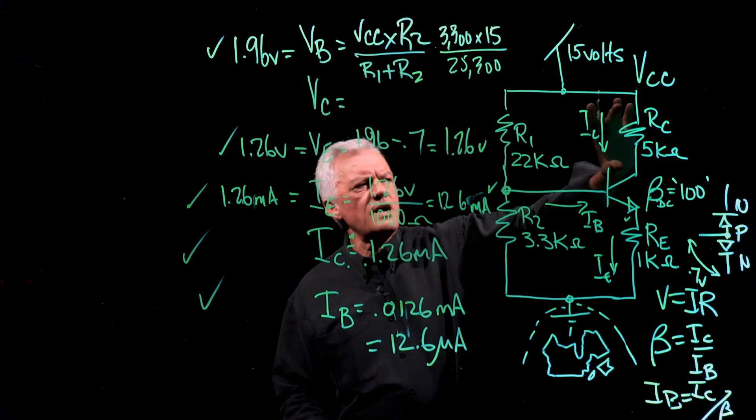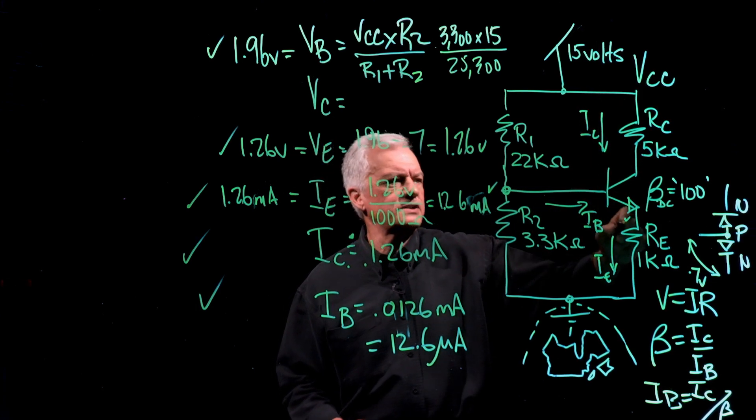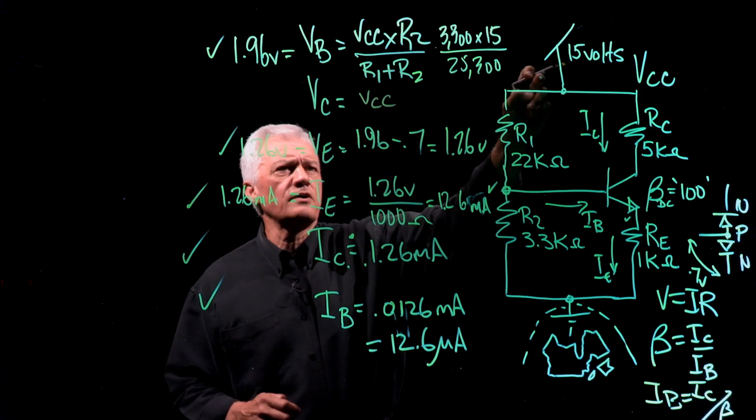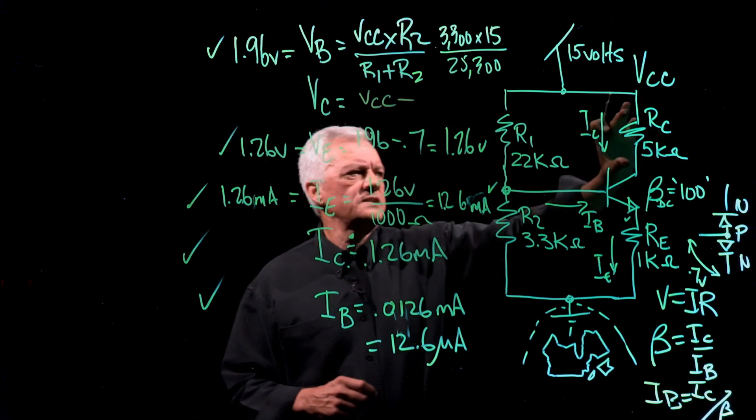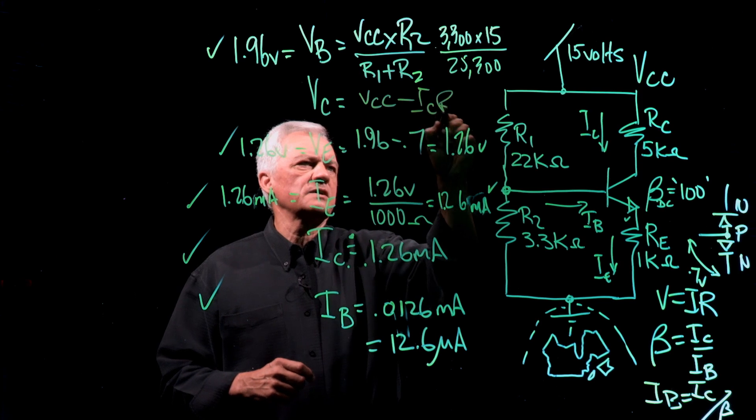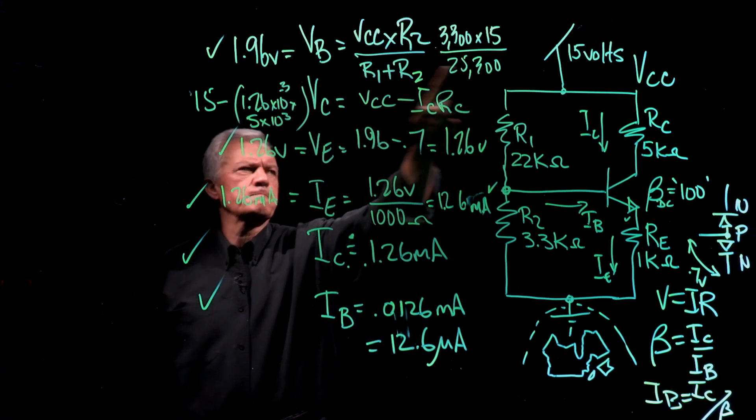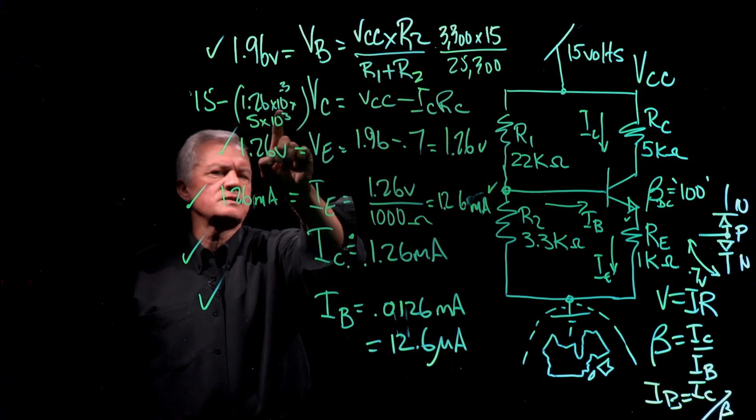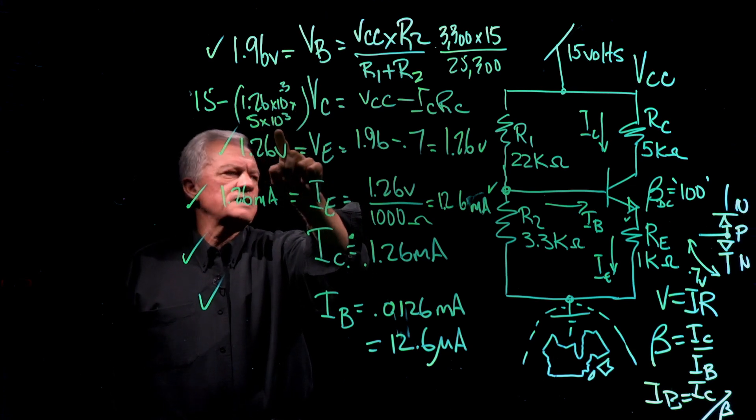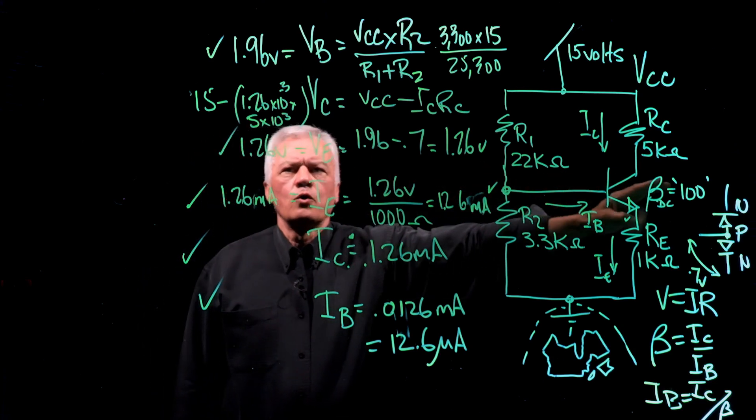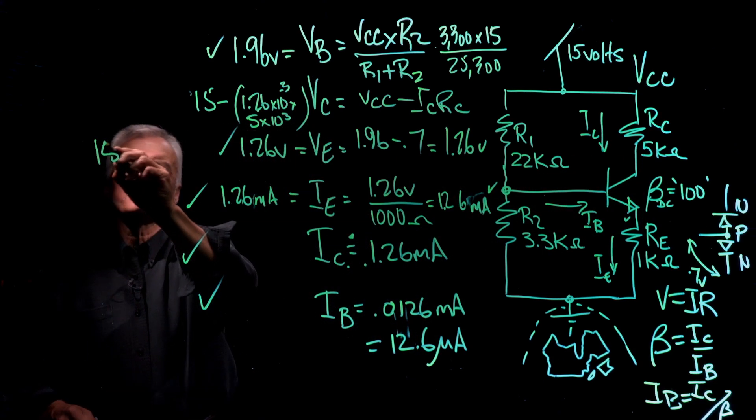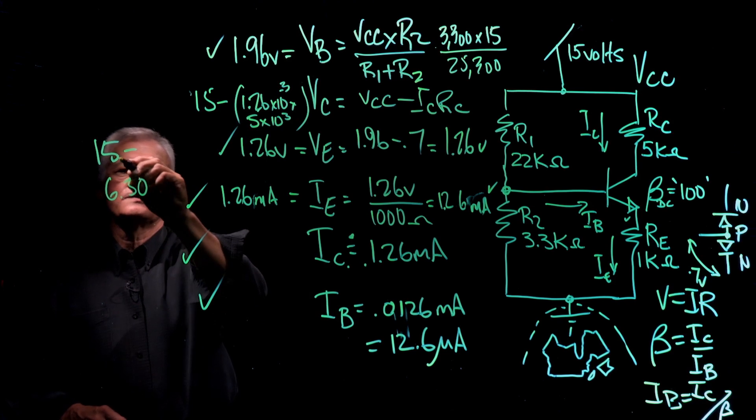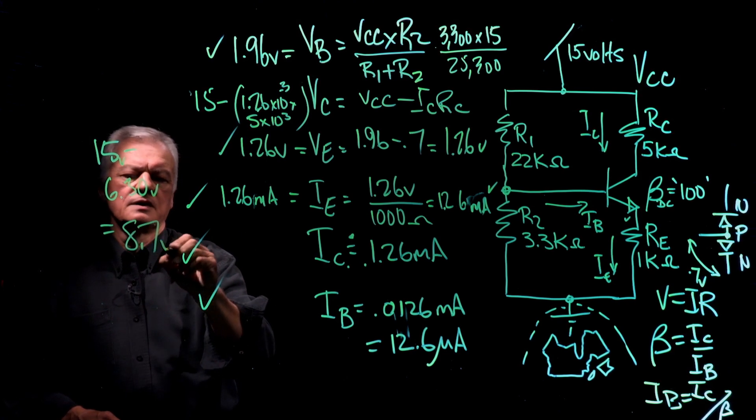And what we notice is, we're going to drop a certain amount of pressure across this resistor. So VC is going to be, at the collector, is going to be the overall push minus, in this case here, what are you dropping across here? Well, it's IC times RC. So 15 volts minus 1.26 times 10 to the minus 3 amperes, or 1.26 milliamps, times 5 times 10 to the 3, or 5,000 ohms. And so let's do the math. We have 15 minus 6.3, so that's 15 volts minus that, is equal to 8.7 volts.